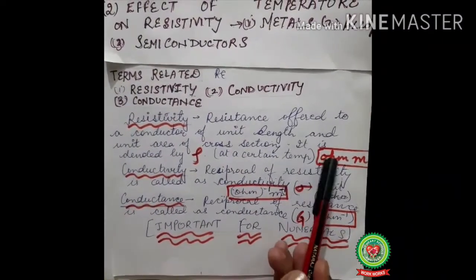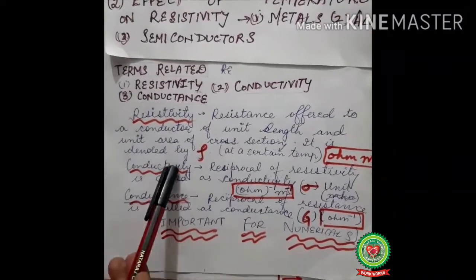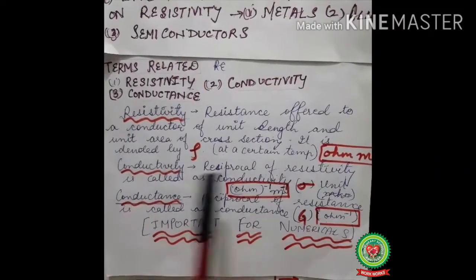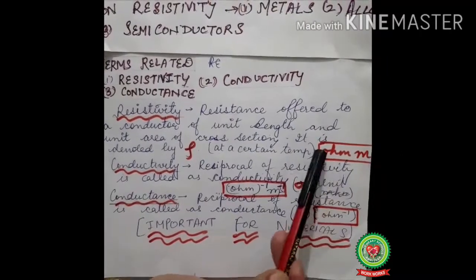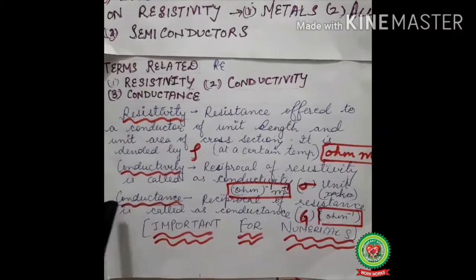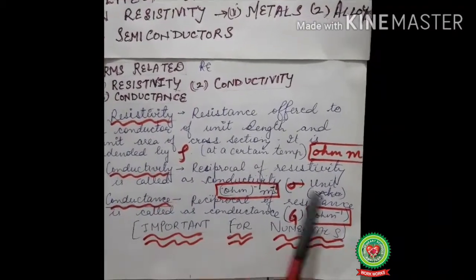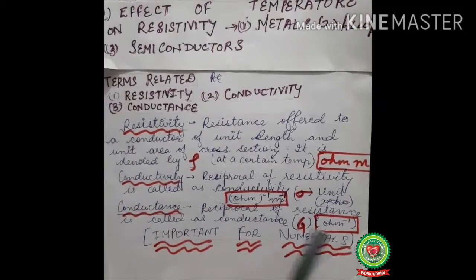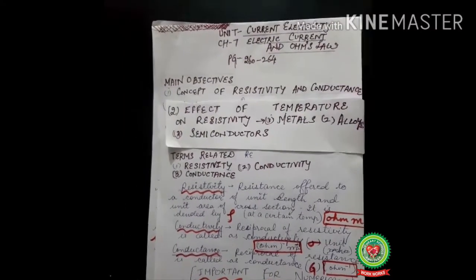The unit of resistivity is ohm meter and its symbol is rho. Next, conductivity is nothing but the reciprocal of resistivity. Its unit is ohm inverse meter inverse, and it is denoted with sigma. Next is conductance, which is the reciprocal of resistance. It is denoted with G and its unit is ohm inverse. The numericals related to these topics are very important.